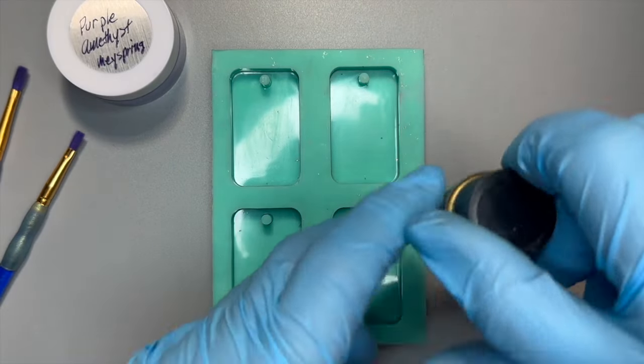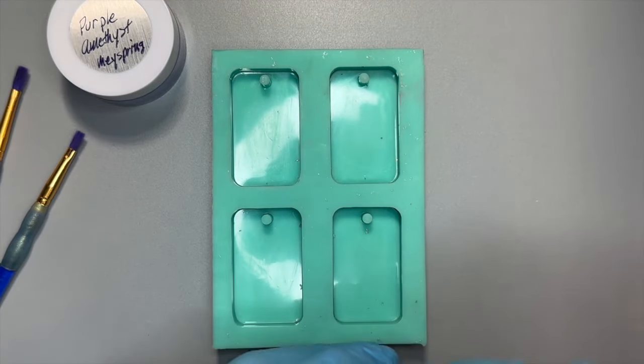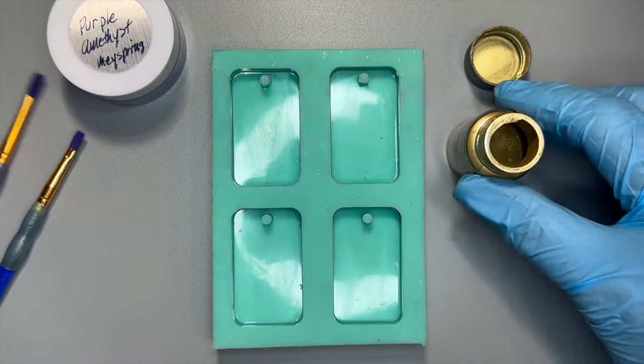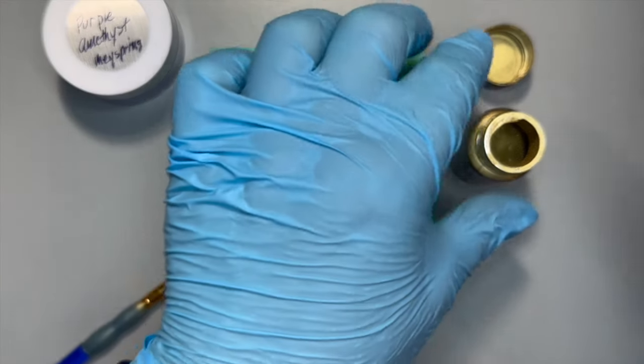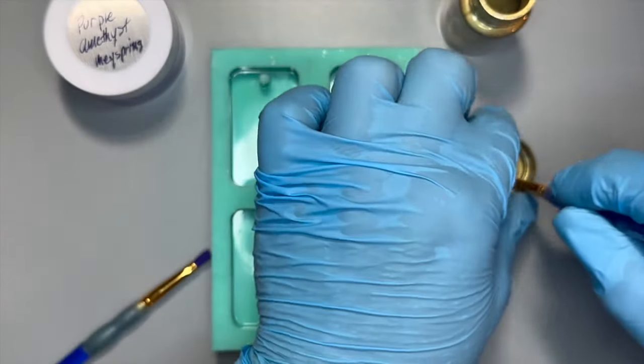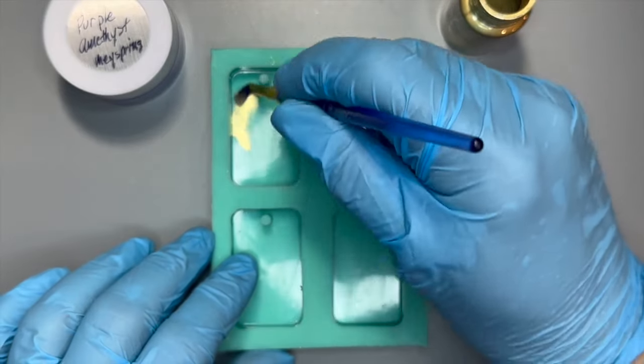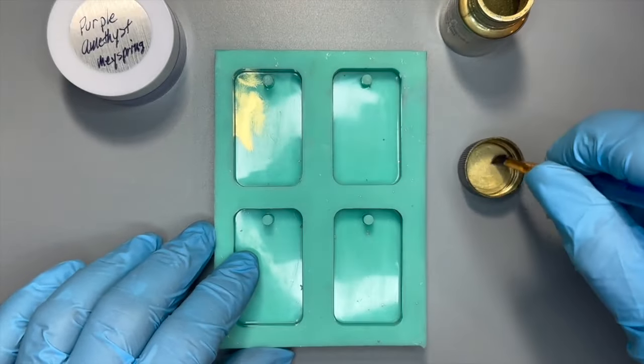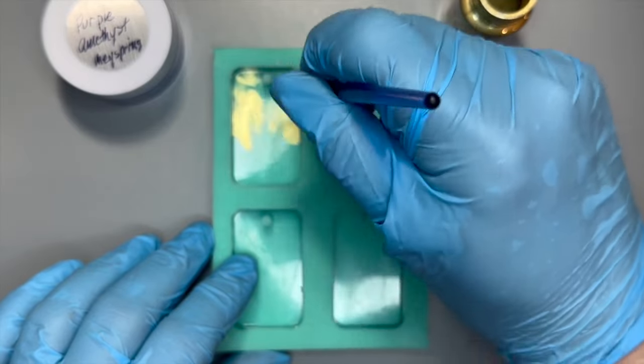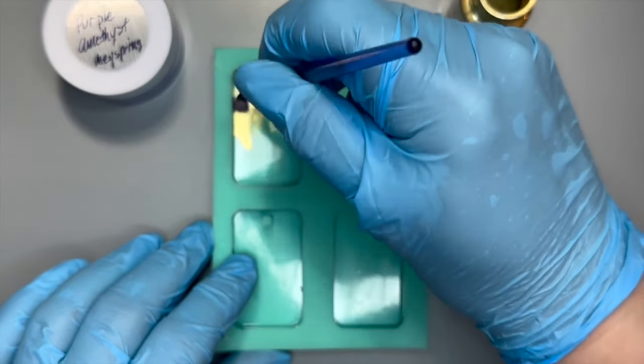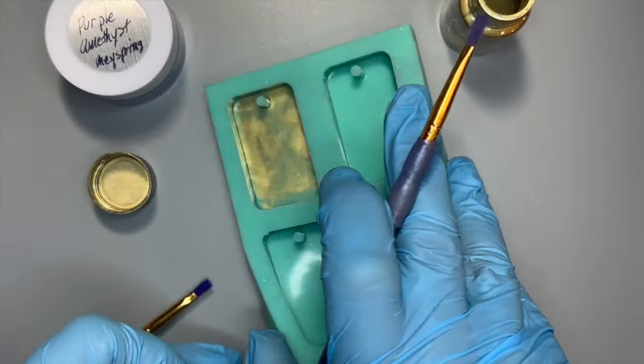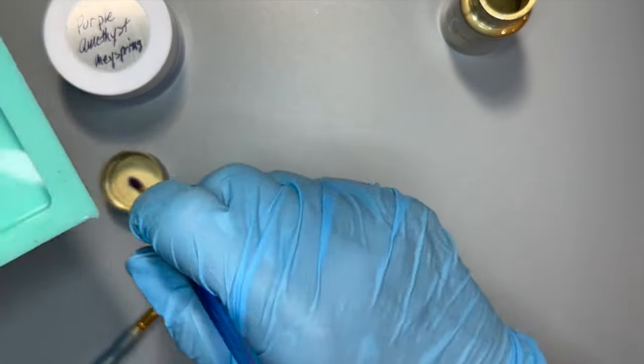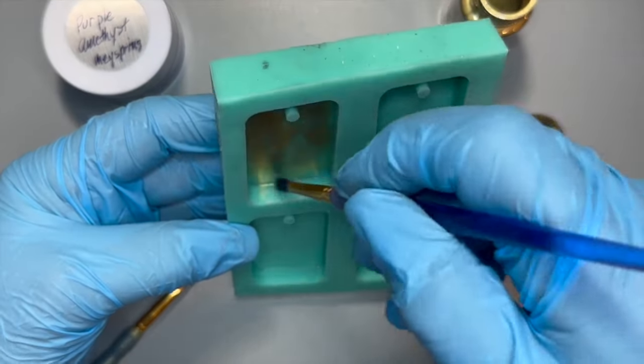On one pendant I'm using Lutz Resin's Metallic Powder and May Spring's Purple Amethyst Mica Powder. This gold powder is not a mica powder, it's a metallic powder and it's very opaque. I use it a lot on my organite platforms and chargers. You can't see anything through it.